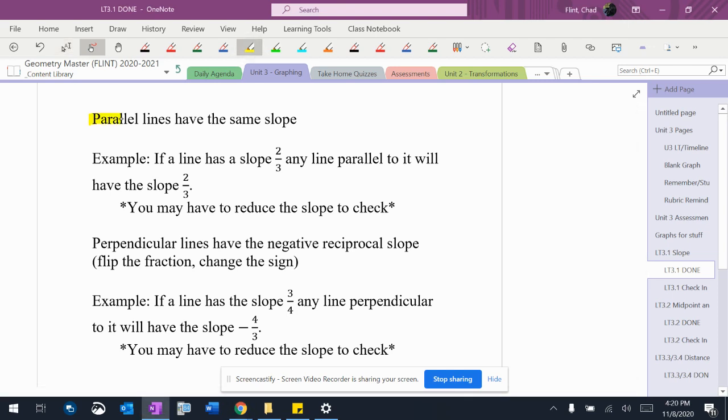Two things that are going to be really important this whole unit: parallel lines have the same slope, and perpendicular lines have negative reciprocal slope, which means you flip the fraction and change the sign. We're going to have to know these two things.